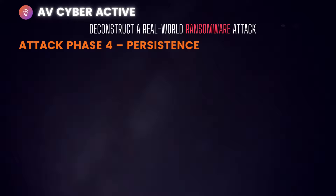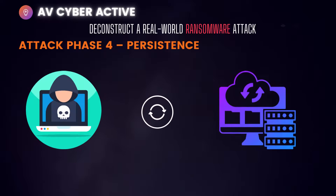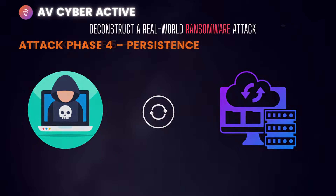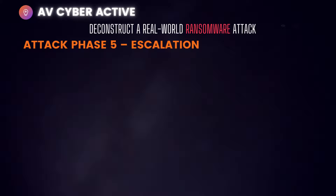Phase four is Persistence, which is often the key to a successful ransomware attack. Once the attacker establishes parallel admin-level access, they use malicious agents to create scheduled tasks that, when live on the machine, automatically reach out to the command and control center to maintain persistence on the victim's network.